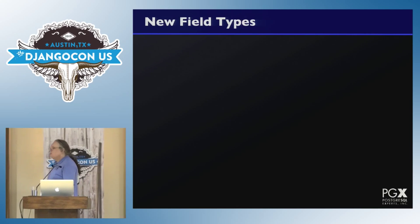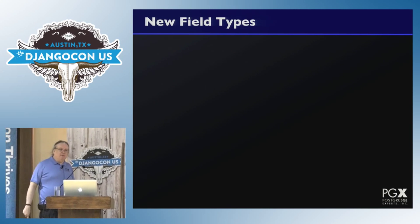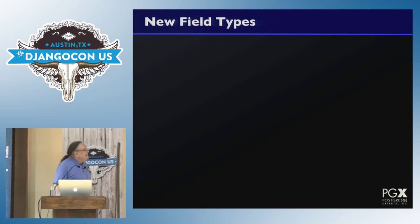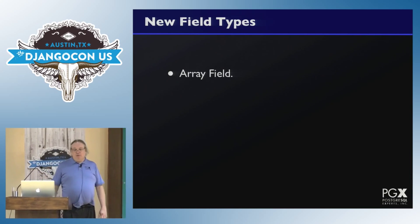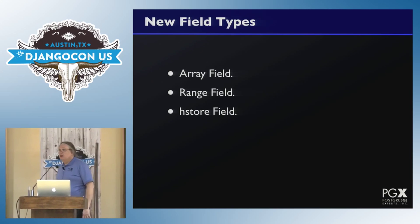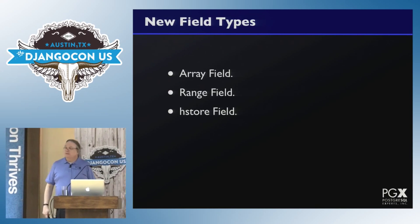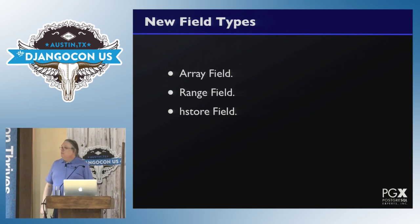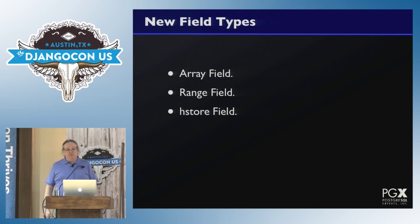That's all you need to know about the new extension facility. Let's talk about 1.8. Django 1.8 adds some new field types: array fields, range fields, and an hstore field. Django 1.9 is going to add some more cool stuff, but this is what we get in 1.8.